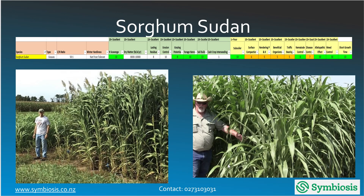Sorghum sudan: it's very good at scavenging nitrogen and great from a grazing perspective. It's very good at soil and subsoil building because it has a large root mass below the ground, so it puts carbon deep down. It also acts like tillage — opening up the soil so that when it decomposes, another plant can follow its root path.